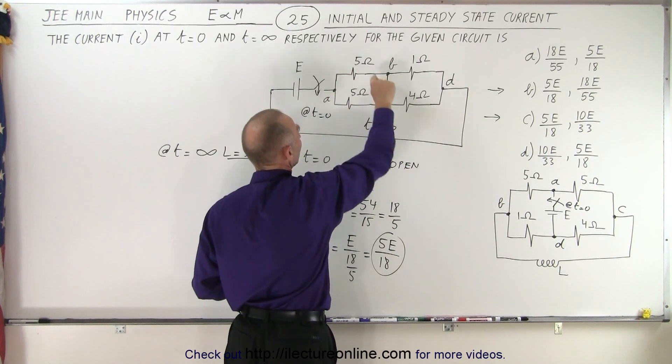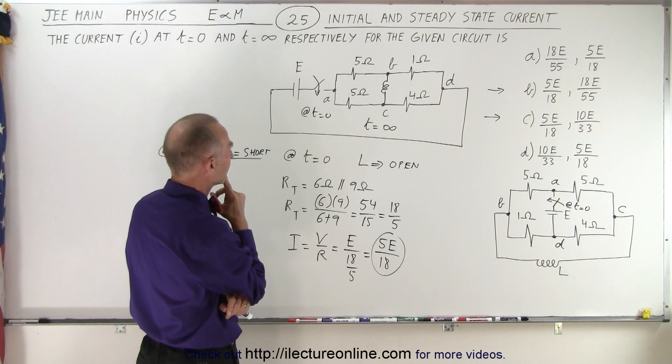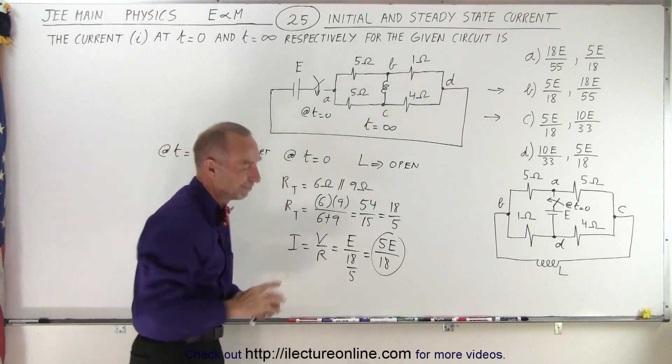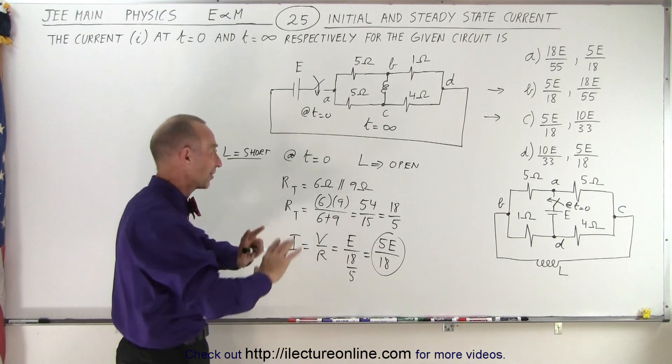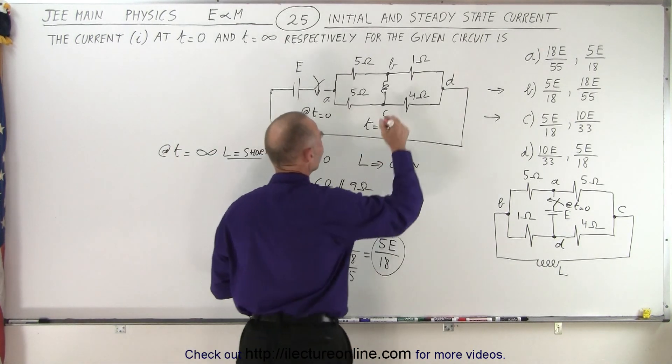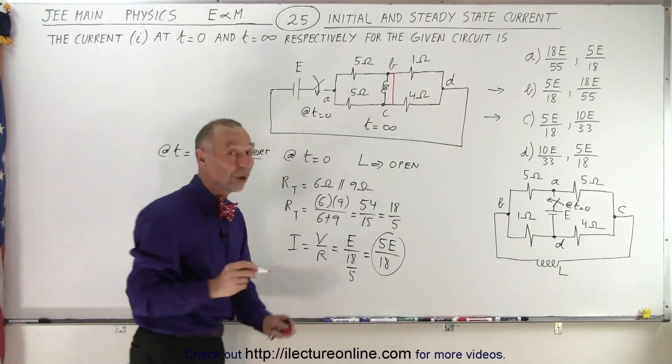these two branches offer resistance to the current, and this one does not offer resistance to the current, so in other words, all the current would simply go around. Well, wait a minute, that is... Ah! For a moment there, I'm going, wait a minute, something is wrong here, but no, let me redraw that because then it makes more sense. At that point, we have a short circuit there. So what do we have now?